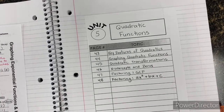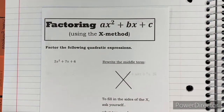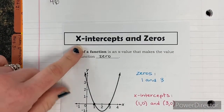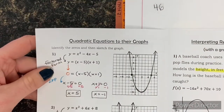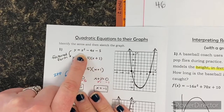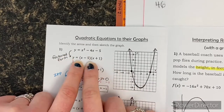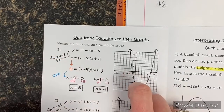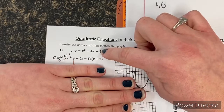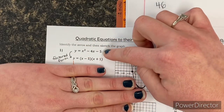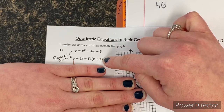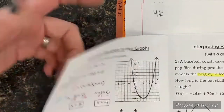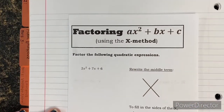Before we really get started with these notes, I want to show you something from a couple lessons back. When we looked at x-intercepts and zeros, we focused on going from standard form and I gave you factored form. From factored form we could identify the zeros and sketch the graph. Today and the next couple of lessons we're going to focus on how you go from standard form — the ax squared plus bx plus c form — into factored form. That process is called factoring.